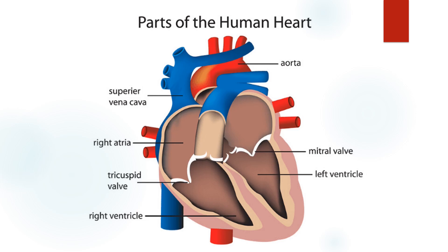Now let's discuss the major organ of the circulatory system: the human heart. The superior vena cava and inferior vena cava are blood vessels that provide the entrance of deoxygenated blood toward the heart. It is received by the right atrium, then passed through the tricuspid valve to the right ventricle, then to the pulmonary arteries going to the lungs to be oxygenated.